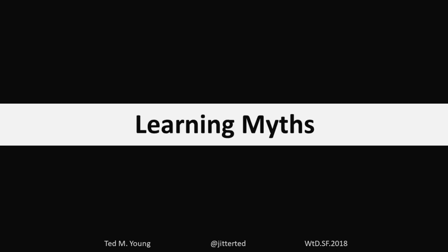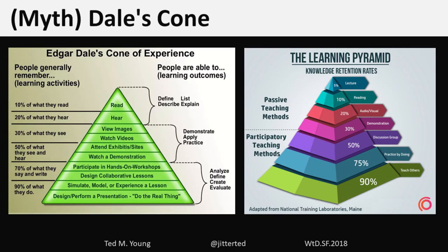To finish off, a couple of learning myths. You might have seen these learning pyramid or similar diagrams — they're lies. You know they're lies because the percentages are too perfect. This 'National Training Laboratories' doesn't really exist — it's bogus, not science at all. If anybody says these things, make sure you call it out.